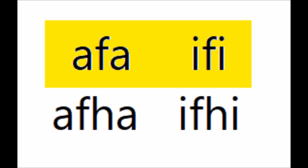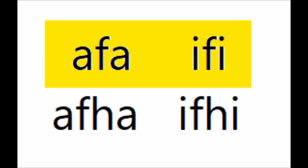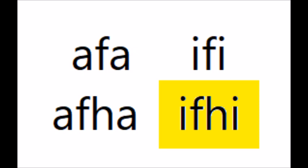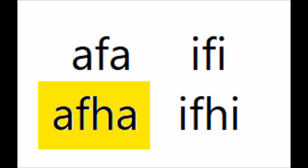For F, the unlenited forms are pretty much just like F in English. The slender lenited form is like the slender lenited D, so you've got J again, and the broad lenited form 99% of the time isn't pronounced at all — there are about three words where it's pronounced like an H.